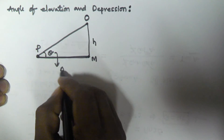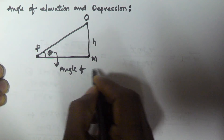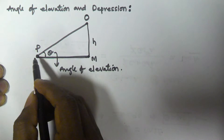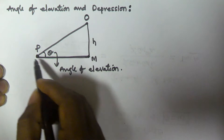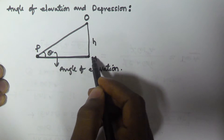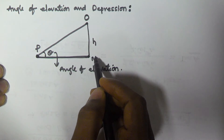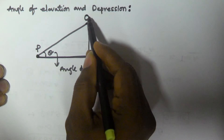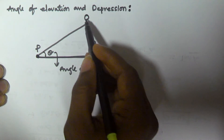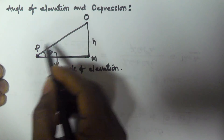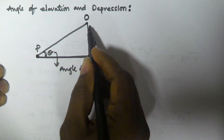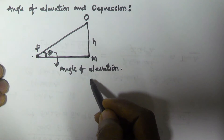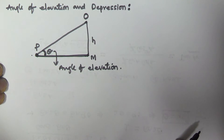So, on a flat surface, person P is standing. At a certain distance, point M is there, and from that point at height H an object O is there. If the person is looking at object O, then the angle OPM is called the angle of elevation.